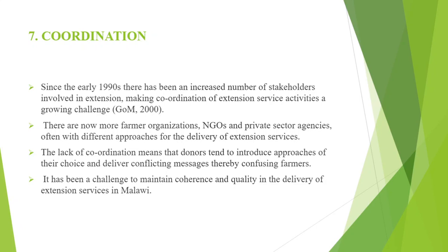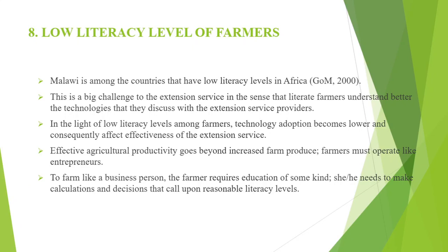Another challenge is low literacy levels of farmers. Malawi is among the countries that have low literacy levels in Africa. This is a big challenge to extension services in the sense that literate farmers understand better the technologies discussed with extension service providers. It is very difficult to convince an illiterate farmer, especially if the technology you want to introduce is a bit complex. In light of low literacy levels among farmers, technology adoption becomes lower and consequently affects the effectiveness of the extension service. Effective agricultural productivity goes beyond increased farm produce — farmers must operate like entrepreneurs and need some level of education to make recommendations and decisions.